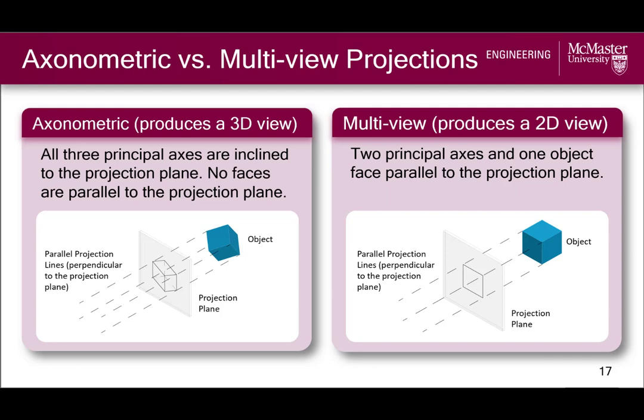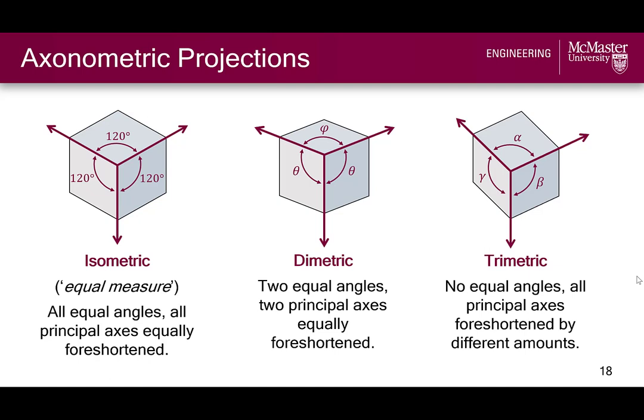Axonometric projections are further subdivided into three categories: isometric, diametric, and trimetric pictorials. In isometric pictorials, all angles between the principal axes are 120 degrees — giving us the name isometric, meaning equal measure. In diametric pictorials, two out of the three angles between the principal axes are equal, and in trimetric pictorials, none of them are equal. Because all faces are inclined to the projection plane, all dimensions appear foreshortened or scaled, and the amount of foreshortening is related to the projection angle. In trimetric pictorials, all three axes are foreshortened by a different amount, and in diametric pictorials, two principal axes are equally foreshortened while the third is different.